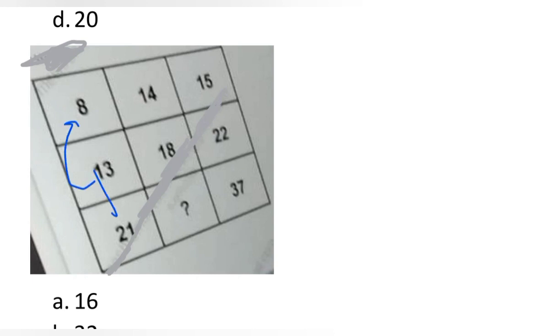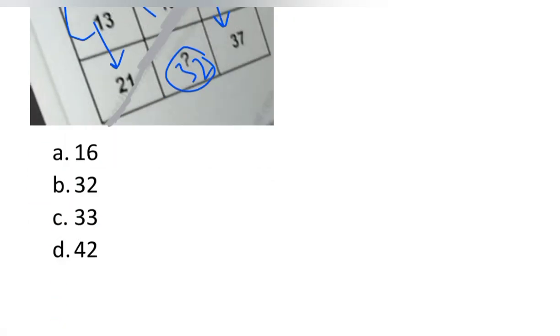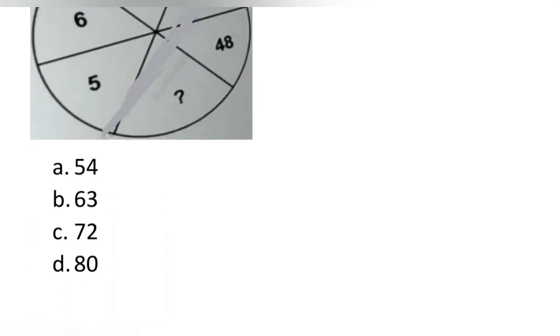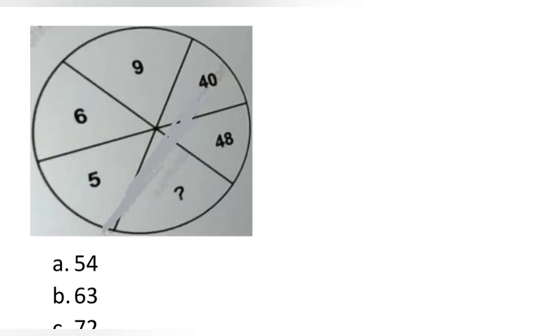Next question — 2 or 3 marks. We have 13 and 8: 13+8 = 21, then adding 6 gives 27. For 22 and 15: 22+15 = 37. For 18 and 14: 18+10 = 28, plus 2 gives 30, plus 2 gives 32. The answer is 32.